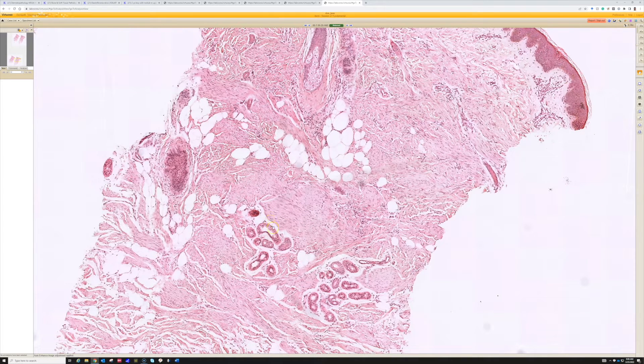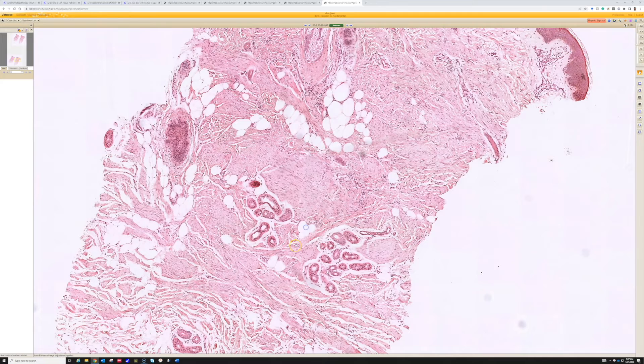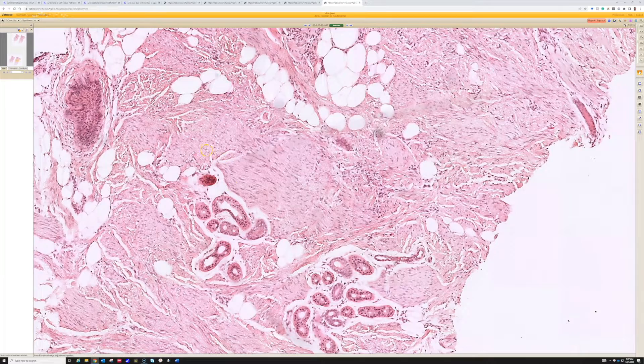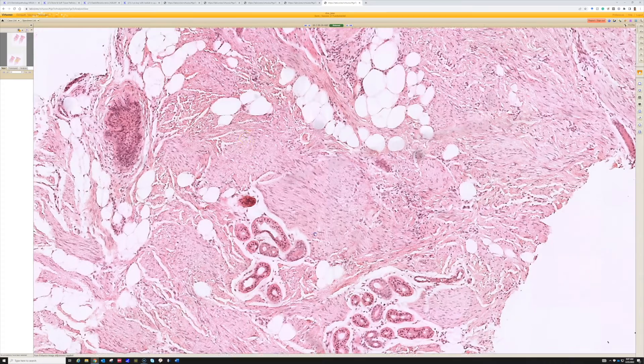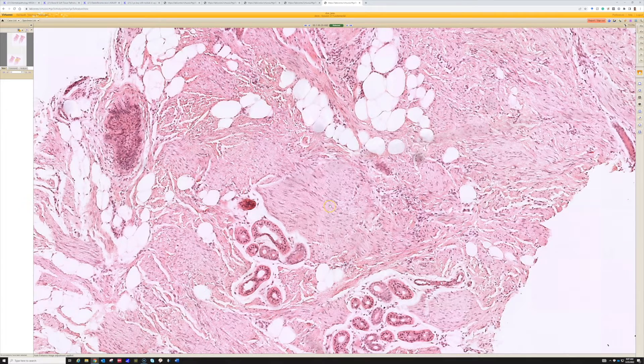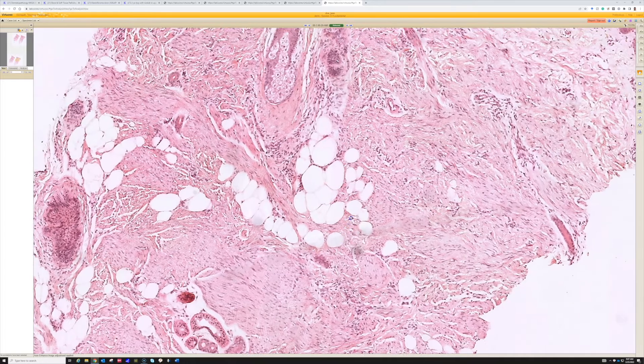So I've not seen before, and maybe I'll be proven wrong one day, but so far, to my recollection, I've not seen this pattern of such discrete fascicles of bland hypocellular spindle cells. I don't recall ever seeing that in a DFSP before.